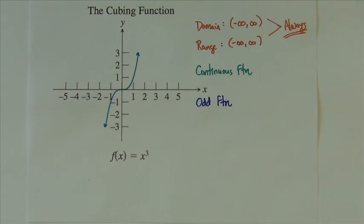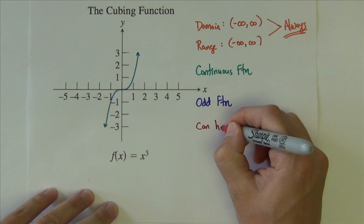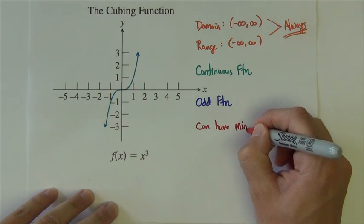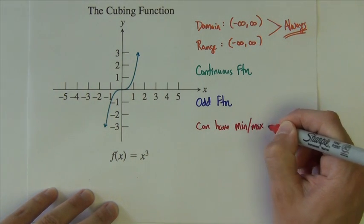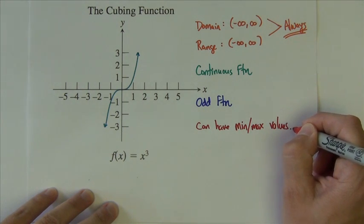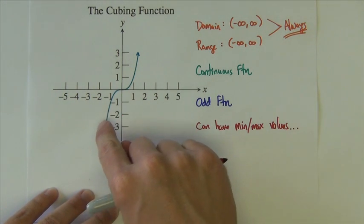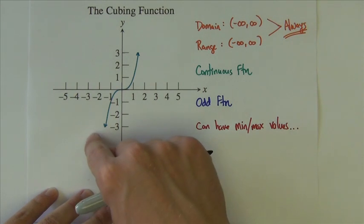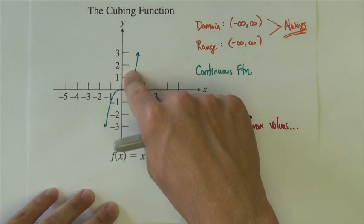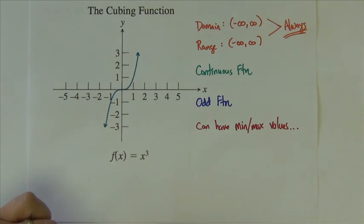And on occasion, although this one doesn't, so we'll write it this way: we'll say it can have minimum or maximum values. This one does not. But it is possible sometimes you have cubing functions if they've got more terms than just this basic one that come up, back down, back up. Sometimes they look like that, as we have seen before.